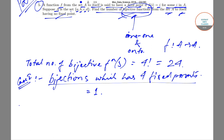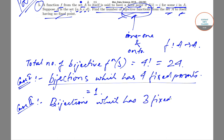The second case will be bijections which have three fixed points. The interesting point here is that if out of four points you have three fixed points — say A goes to A, B goes to B, and C goes to C — then D has to go to D as well. So a bijection with three fixed points is analogous to four fixed points; it has already been counted there. Therefore, bijections with exactly three fixed points is zero.